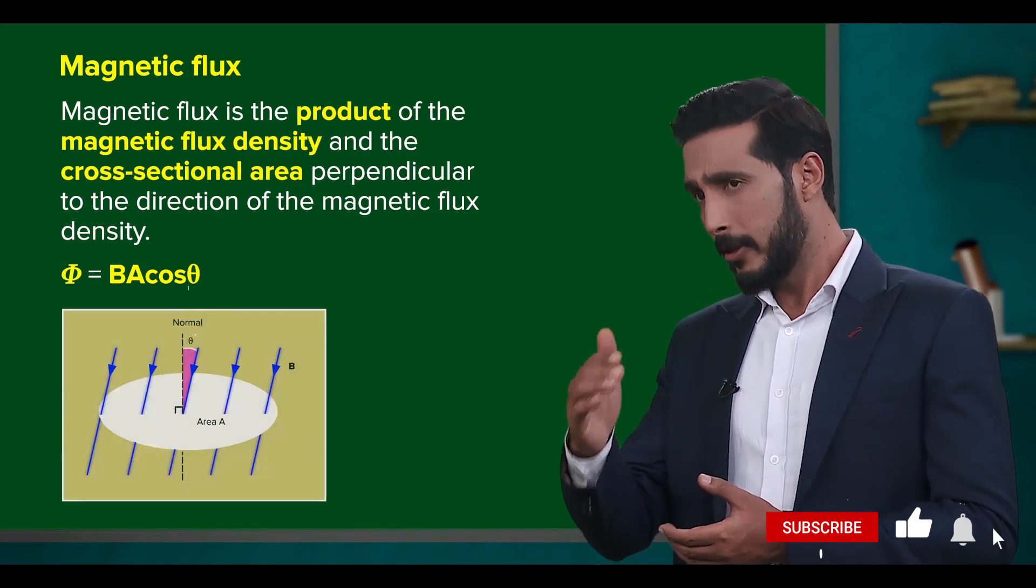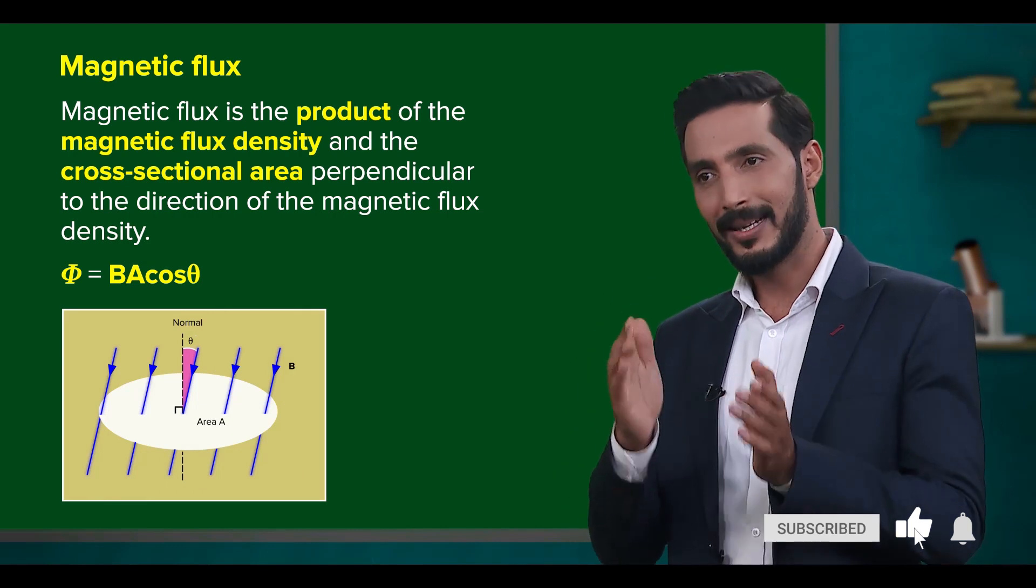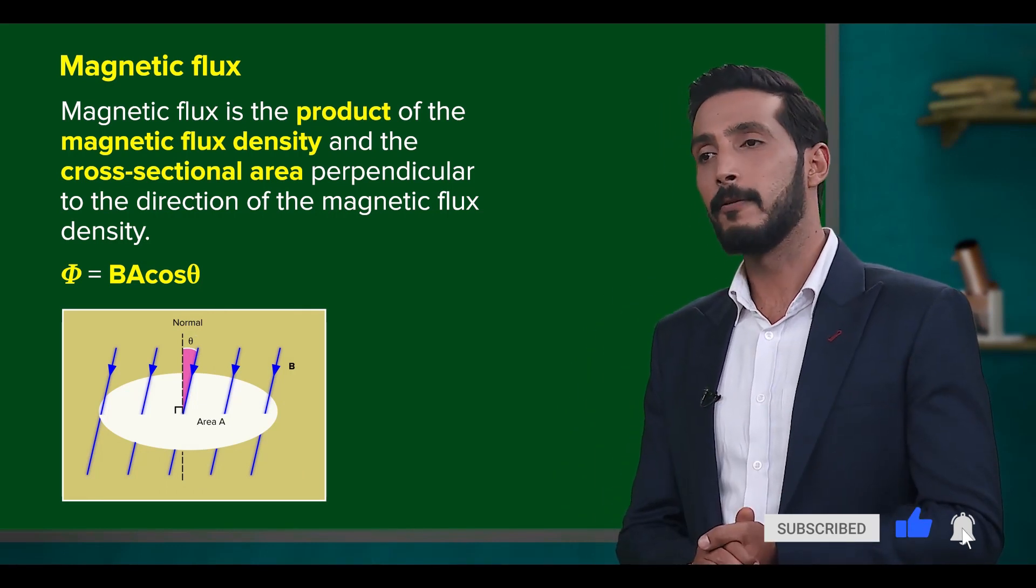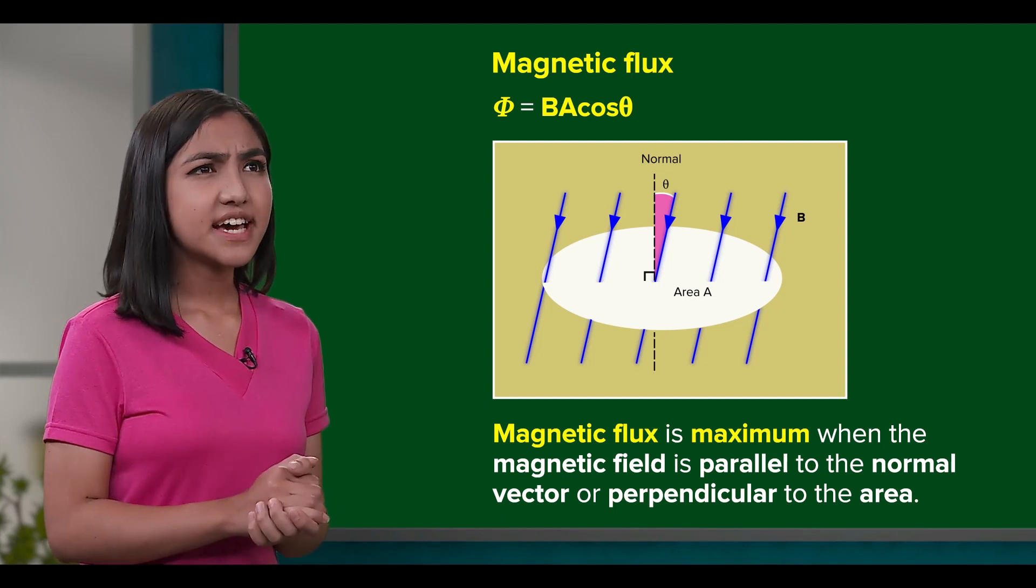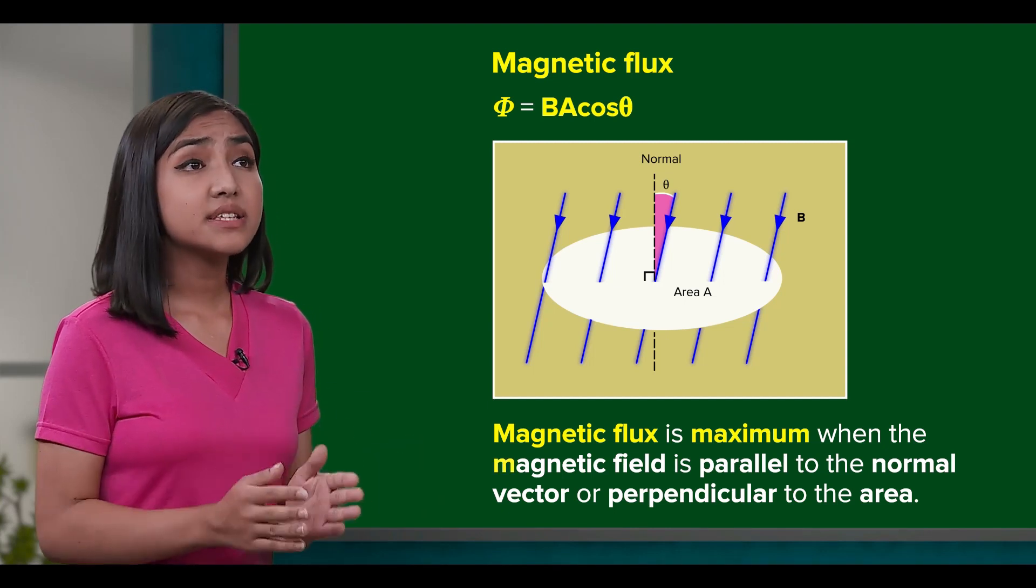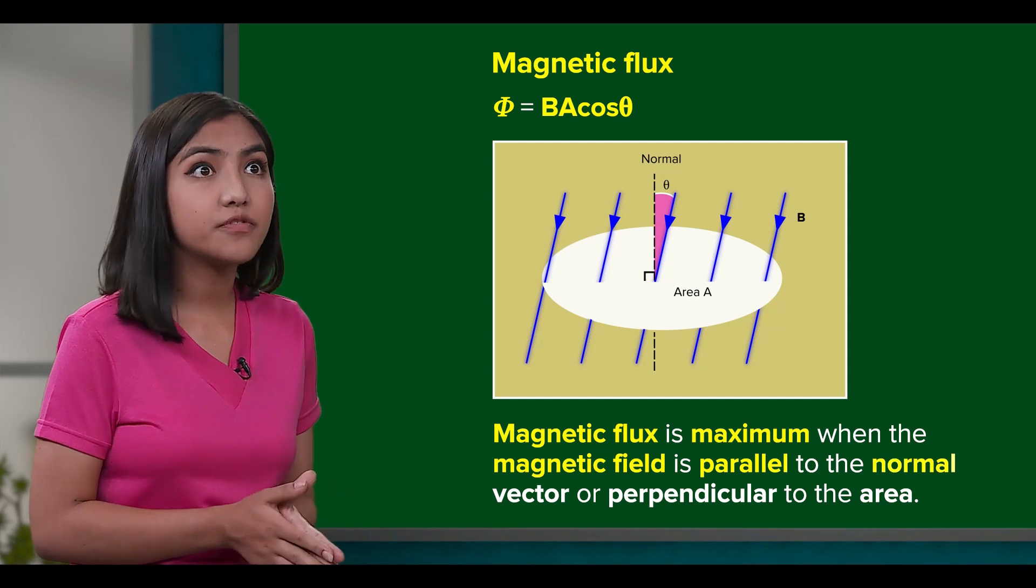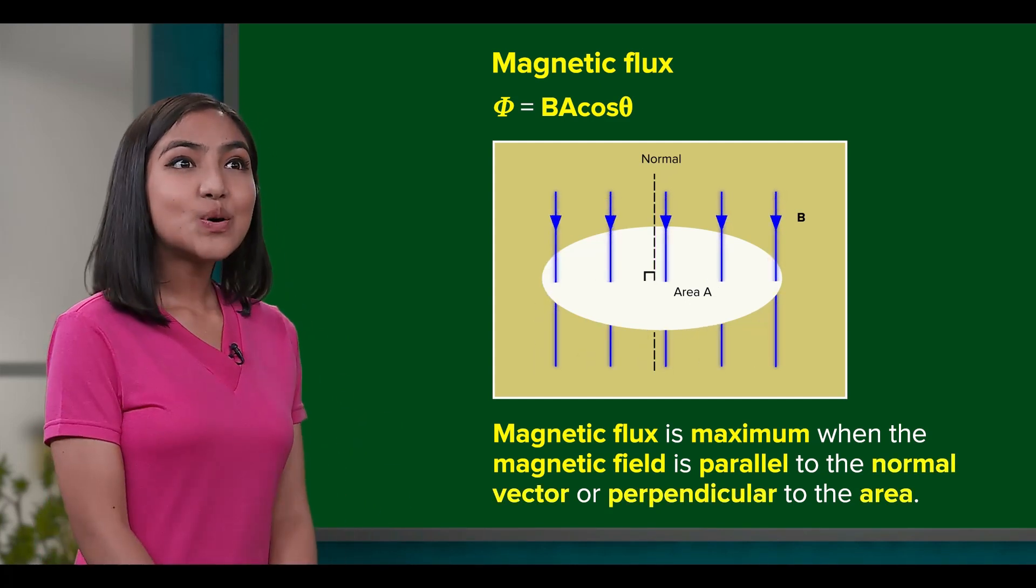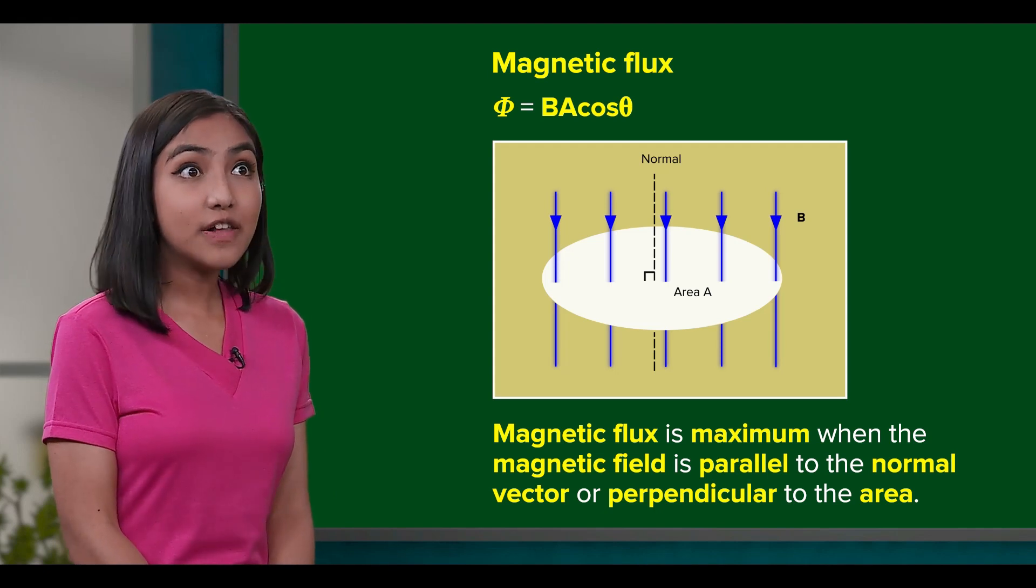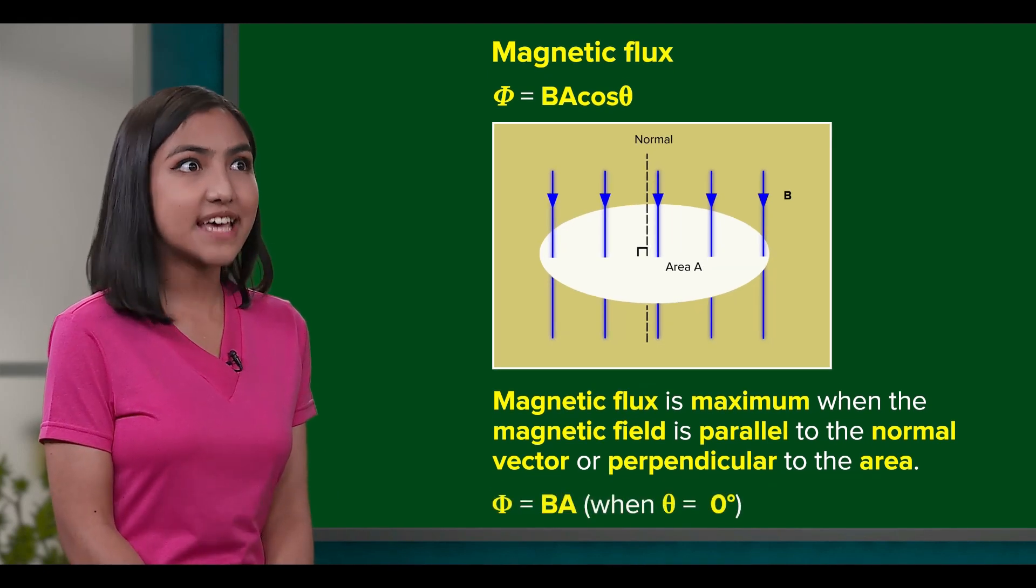Glad to hear that. Now, here, like before, theta is the angle between the magnetic flux density and the vector perpendicular to the area A. Got it. If theta is zero degrees, that means the field is parallel to the normal vector. In other words, perpendicular to the area. So, we have the maximum value of flux, which is simply B times A.